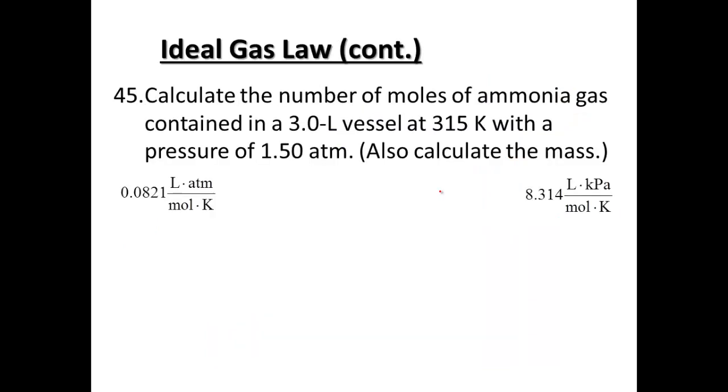So let's look at number 45. In question 45, it says calculate the number of moles of ammonia gas containing a 3 liter vessel at 315 Kelvin, volume, temperature, with a pressure of 1.5 atmospheres. So if we were to look, we're looking for number of moles. We have volume, temperature, and pressure.